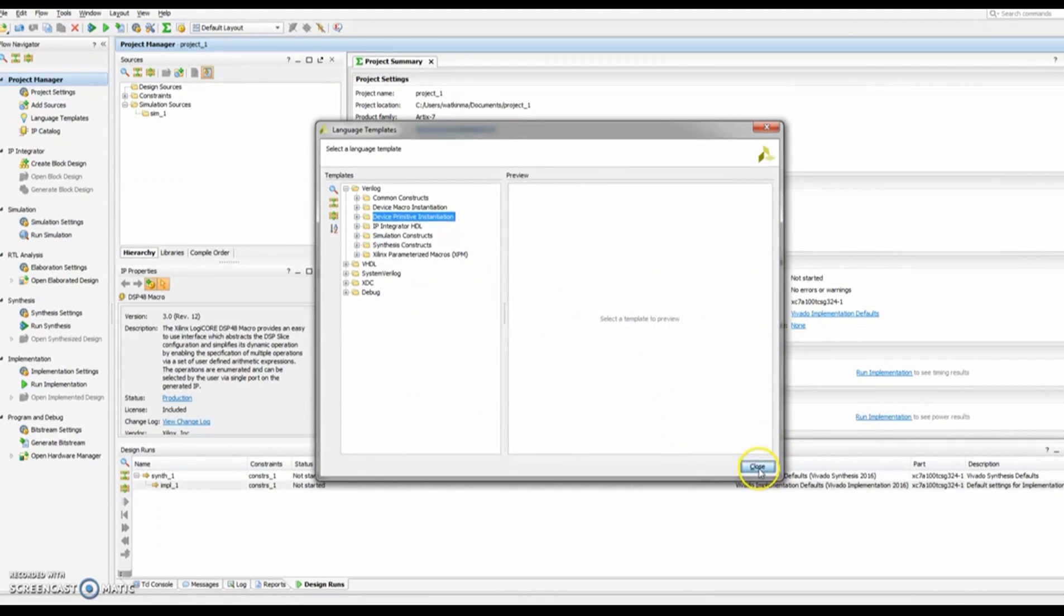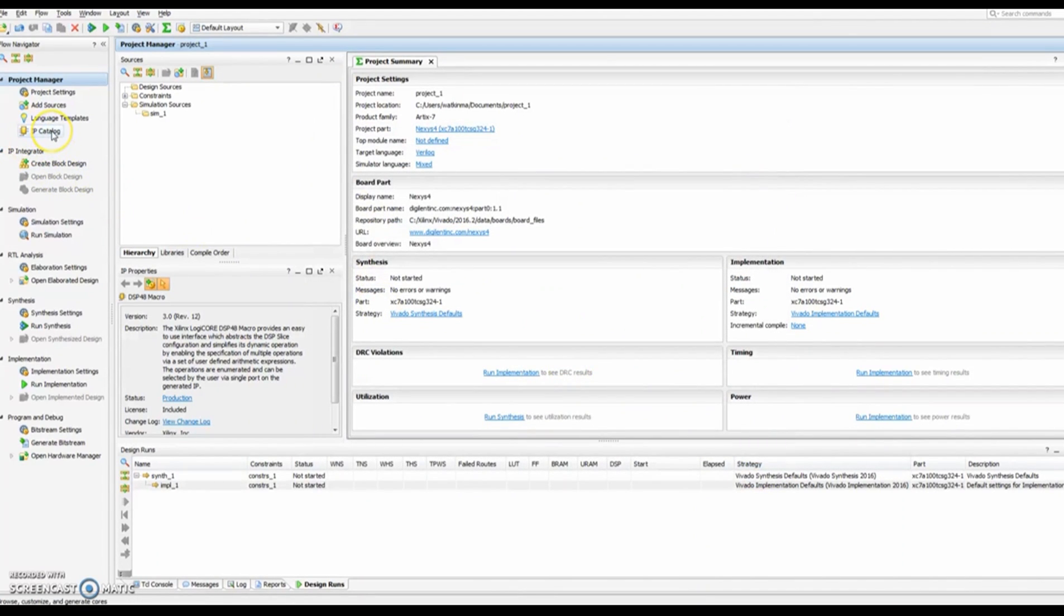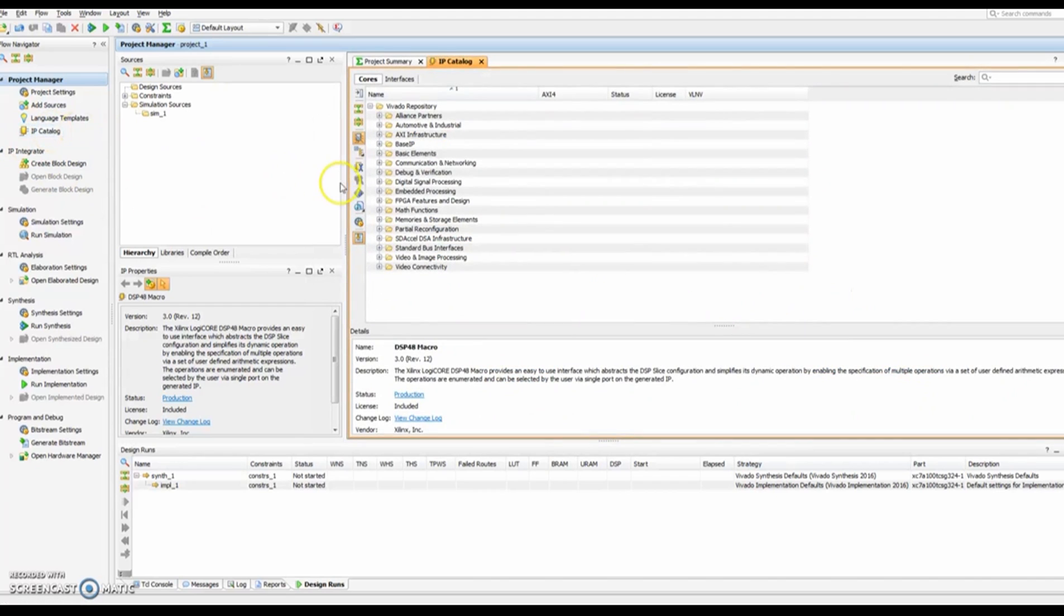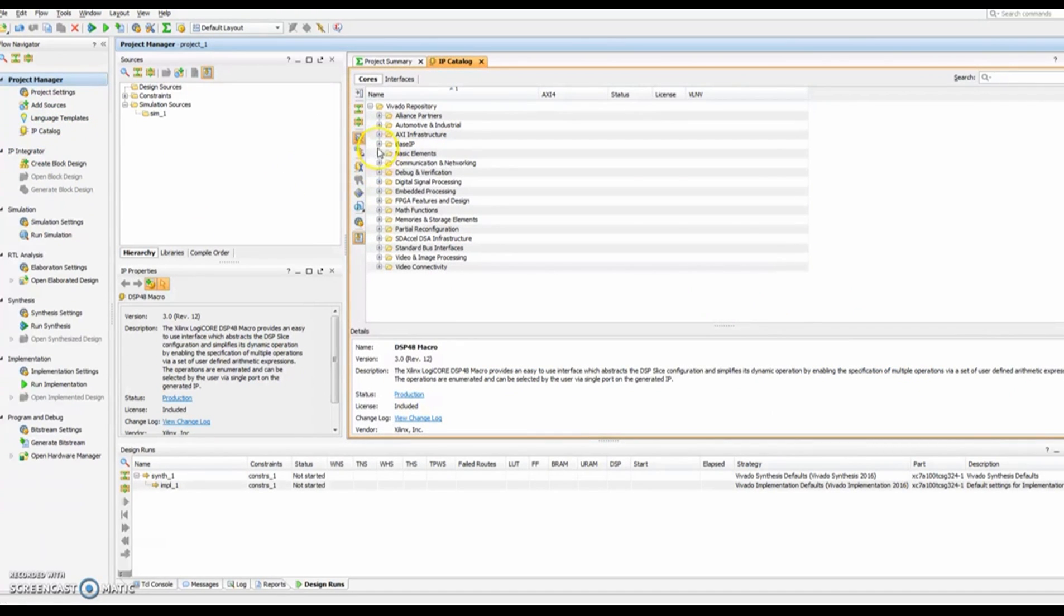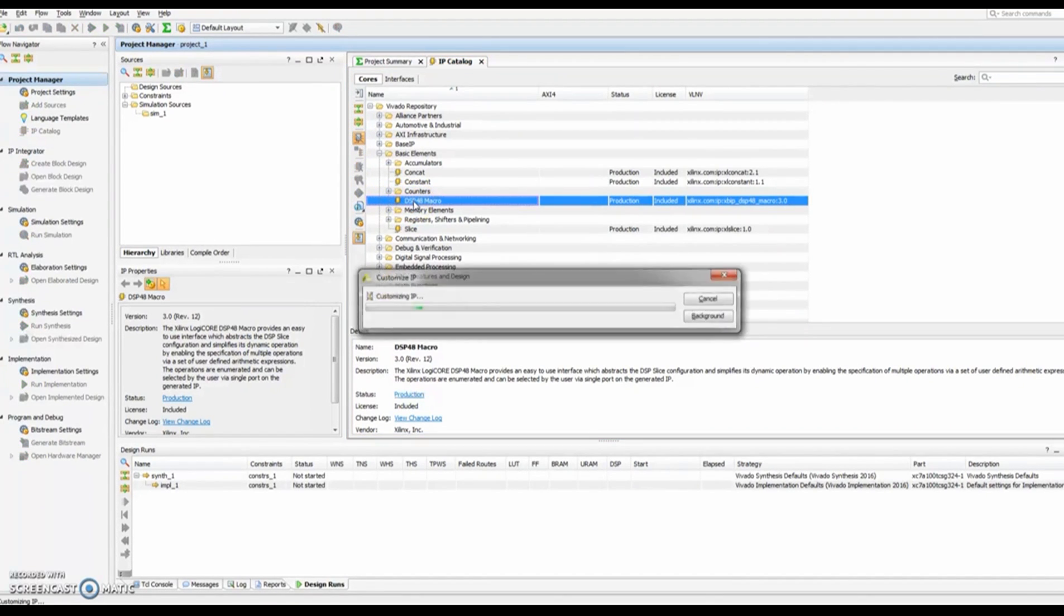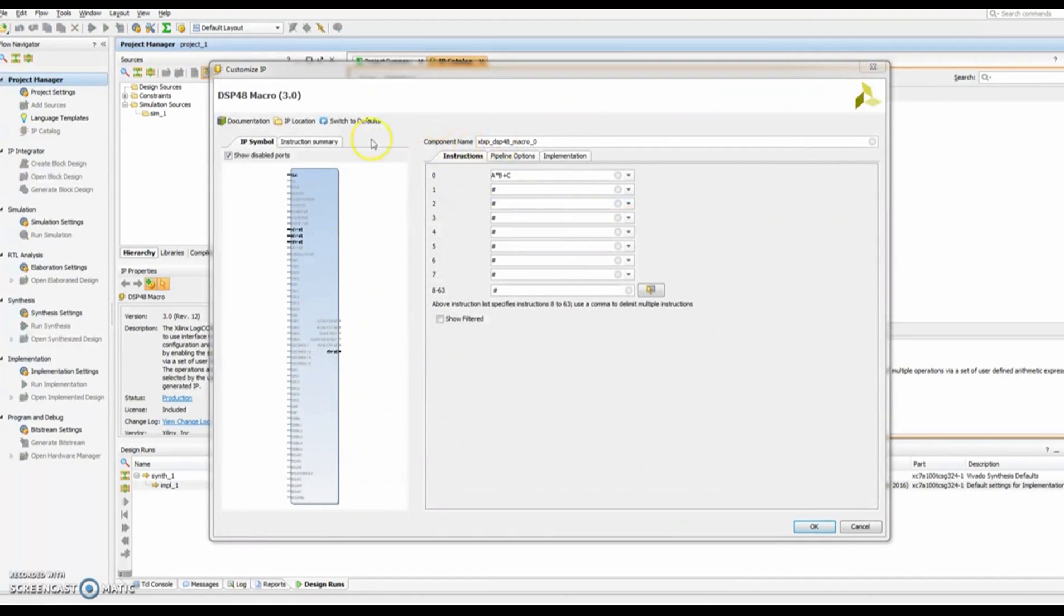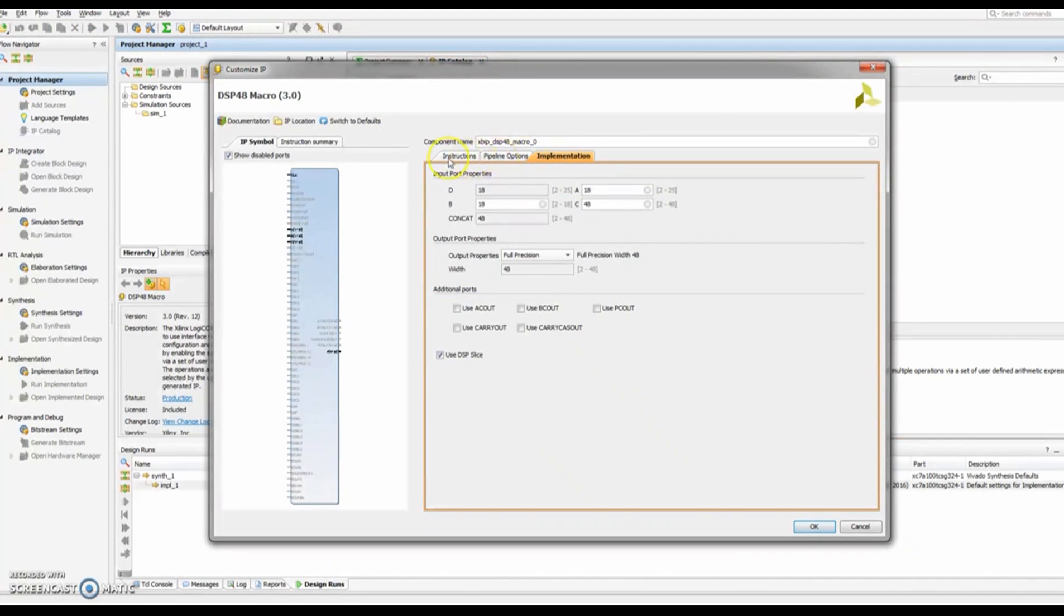So that covers two of the options and then the third option is under the IP catalog. Under the basic elements there is a DSP macro and when you bring that up it offers you options to configure the DSP block in various different ways and how it is pipelined and how it is implemented.